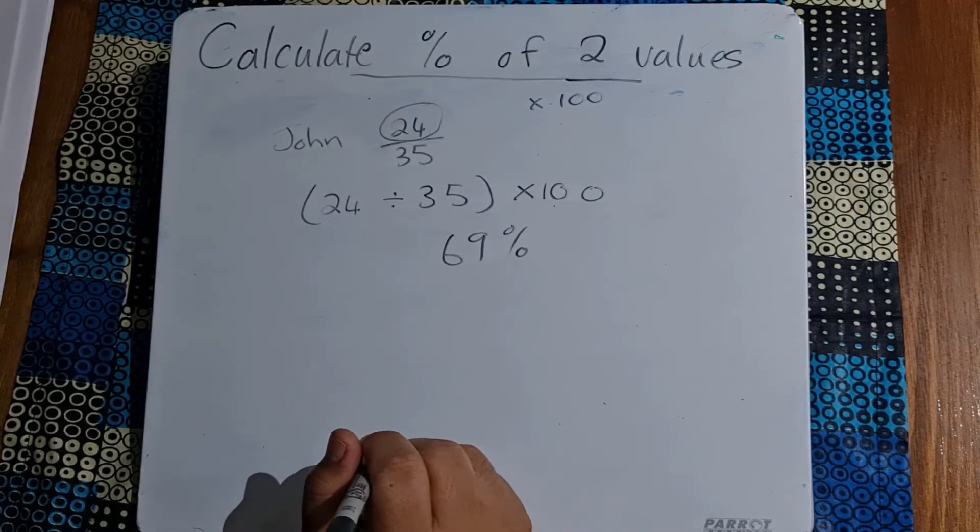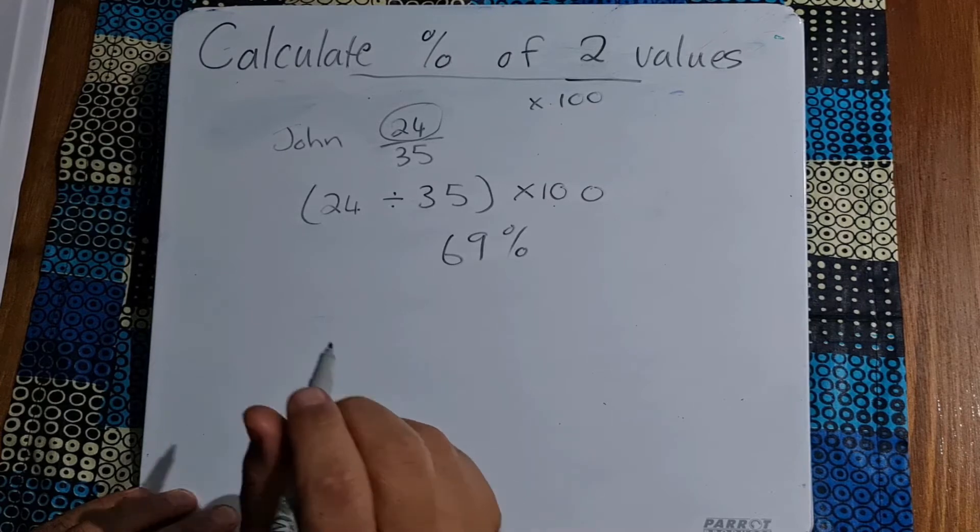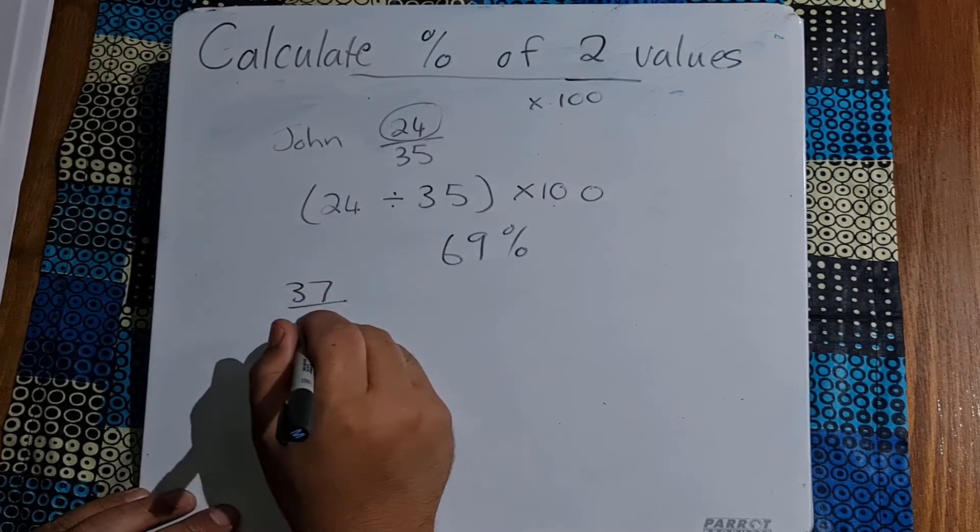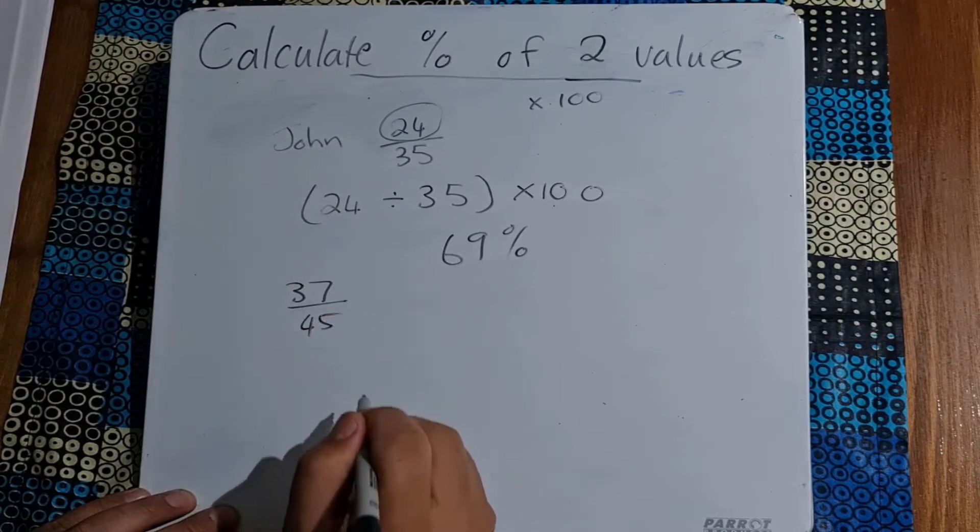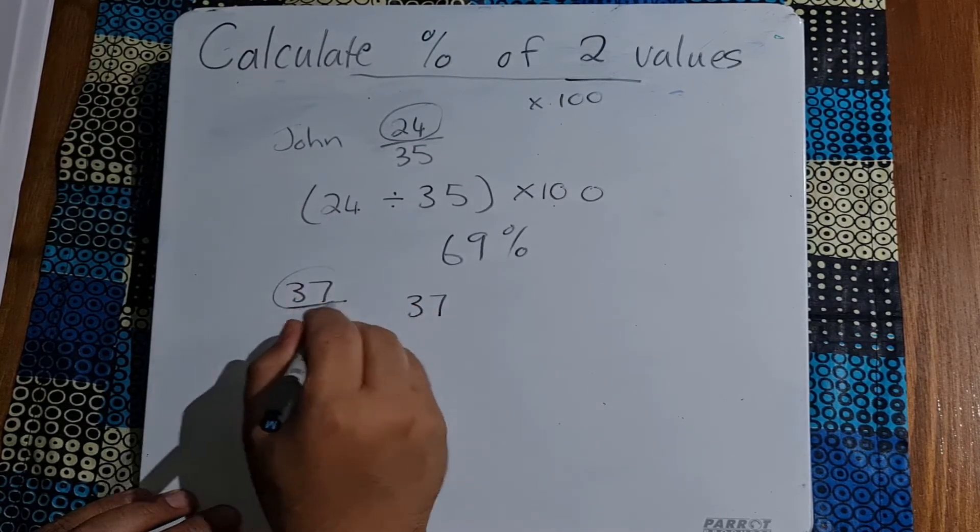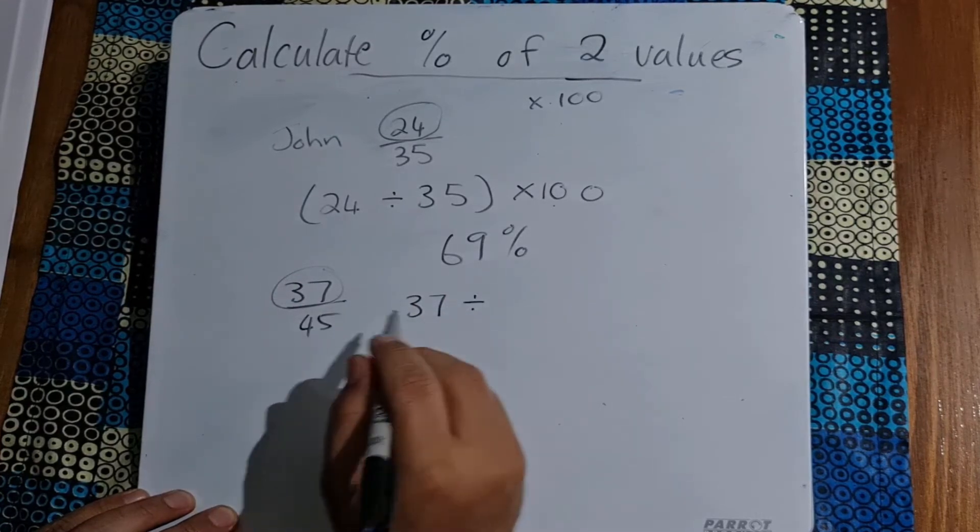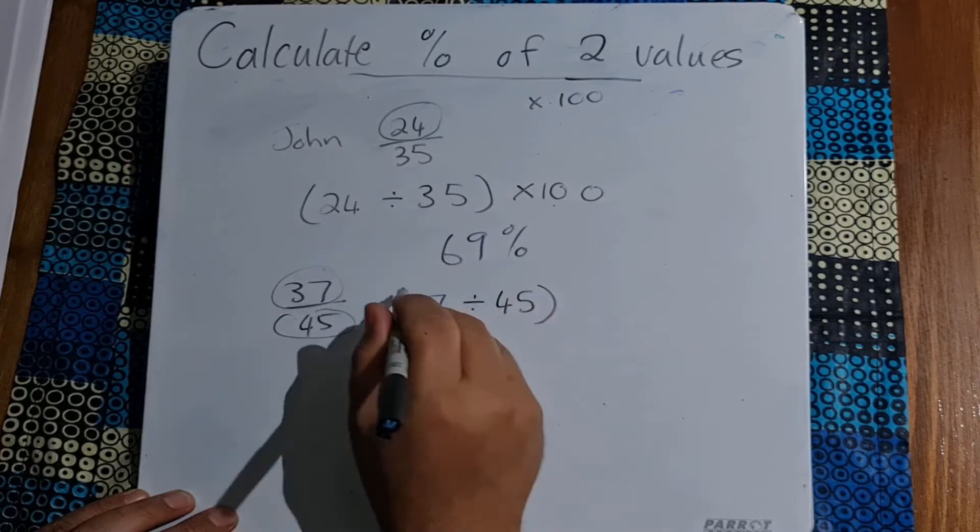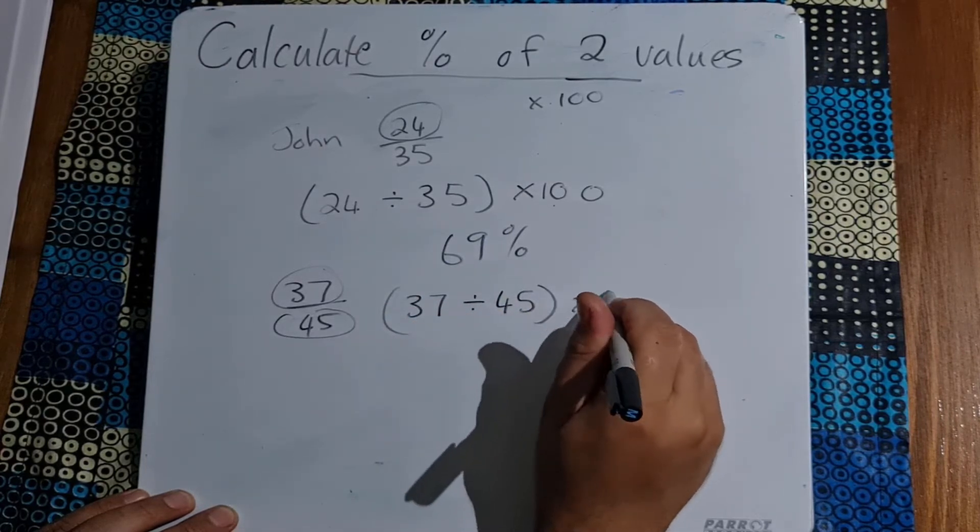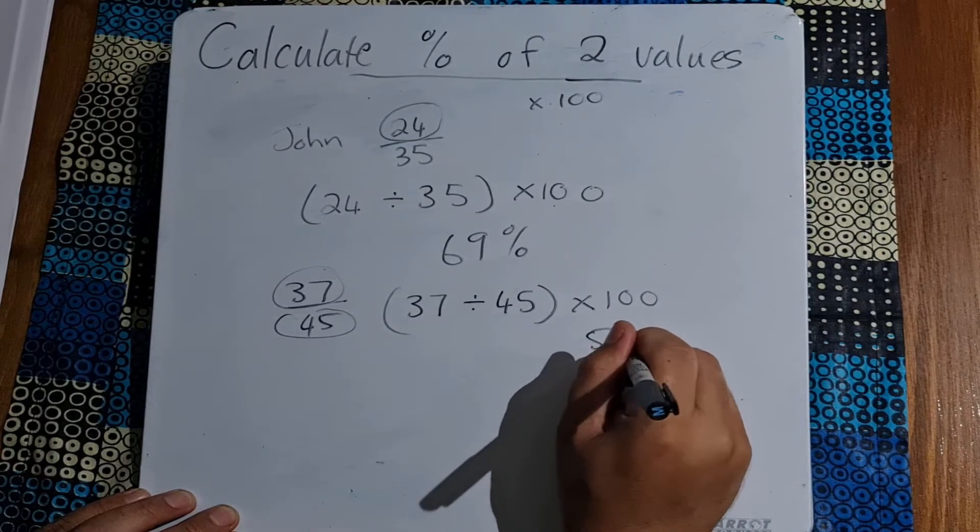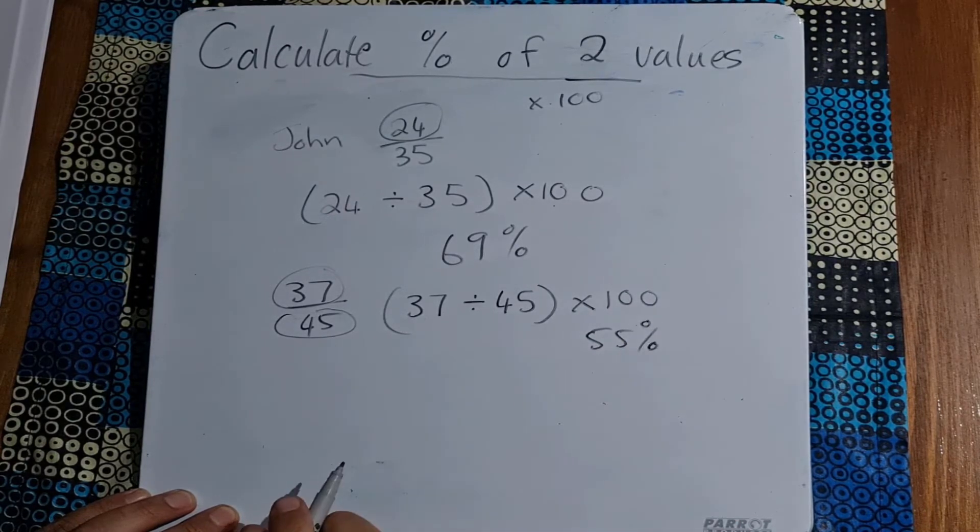Let's just take another example. Someone getting 37 out of 45. What do we do? We're going to take the 37, whatever that number is, divide that by whatever it's out of, which is 45. We want to get that answer first and then multiply that by 100, and in this case we'll get 55 percent.